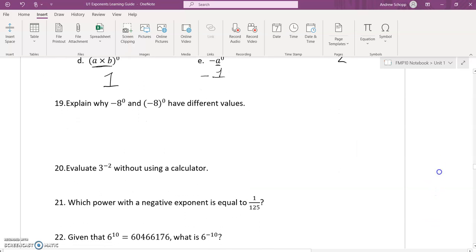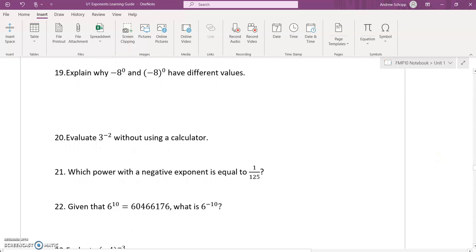Question 19: explain why -8^0 and (-8)^0 have different values. This first one is the negative of 8 to the power of zero. So there's negative 1 times 8^0, and 8^0 is 1. So negative 1 times 1 is just negative 1. On the right, we have negative 8 as the base being raised to the power of zero, so the whole thing is just 1. On the left, 8 is the base; on the right, negative 8 is the base.